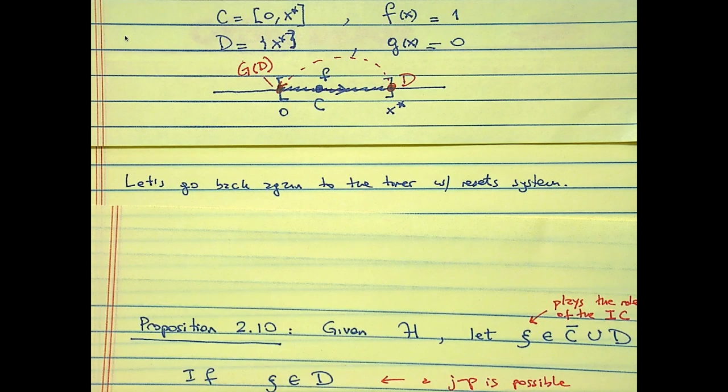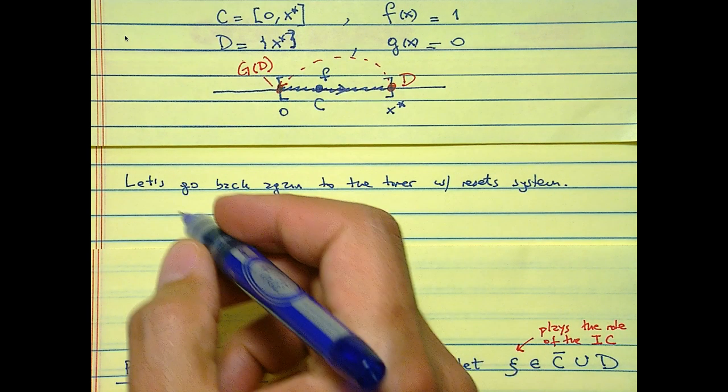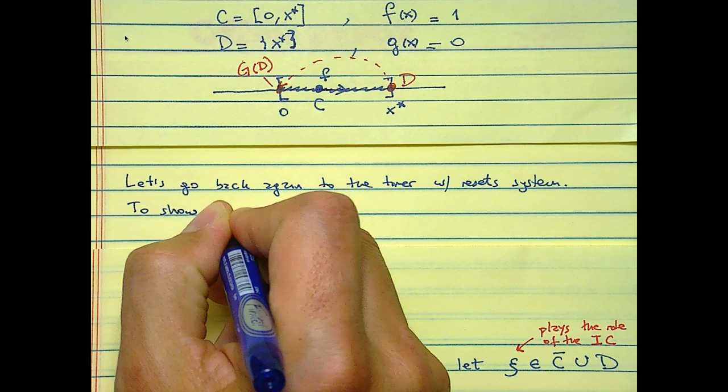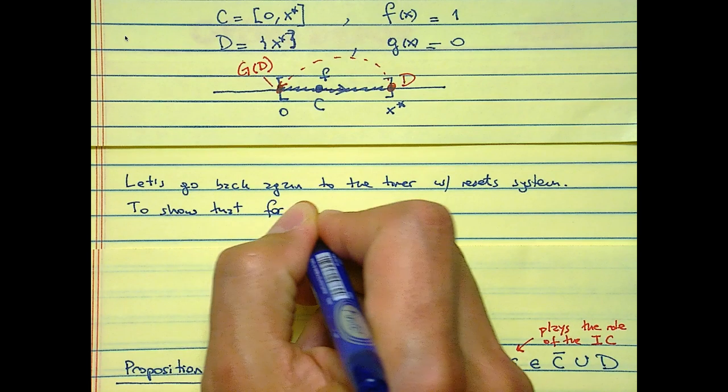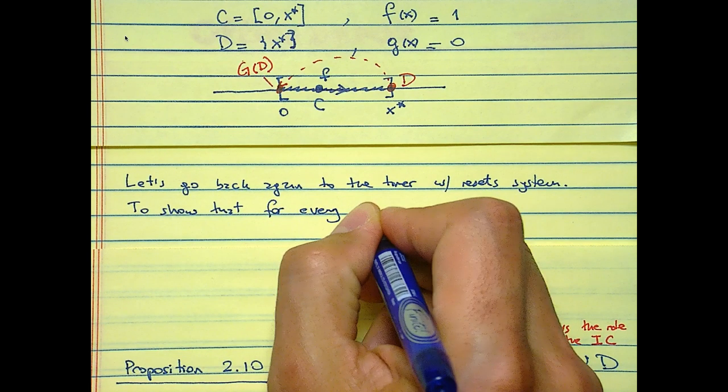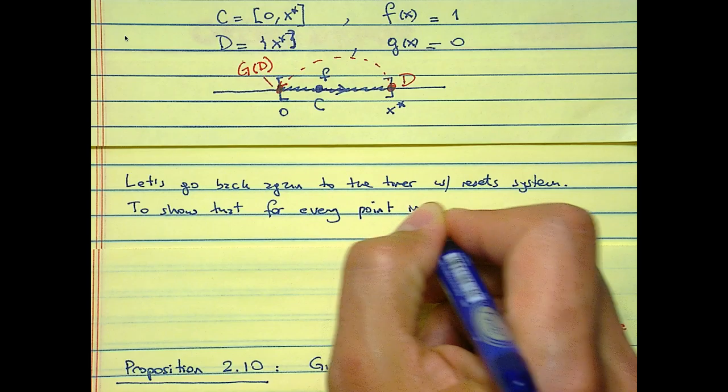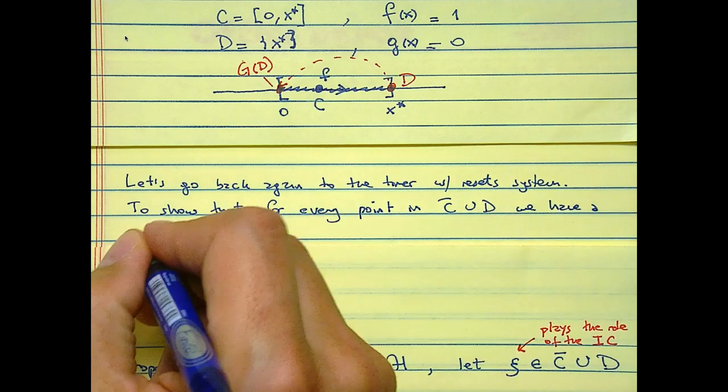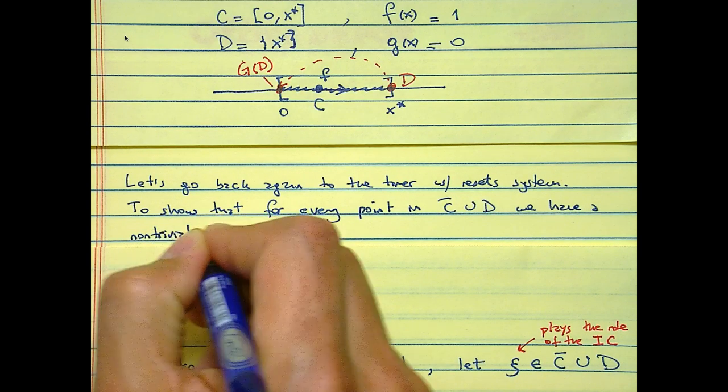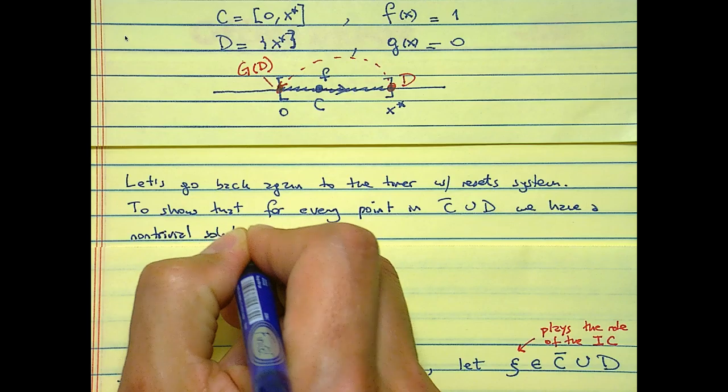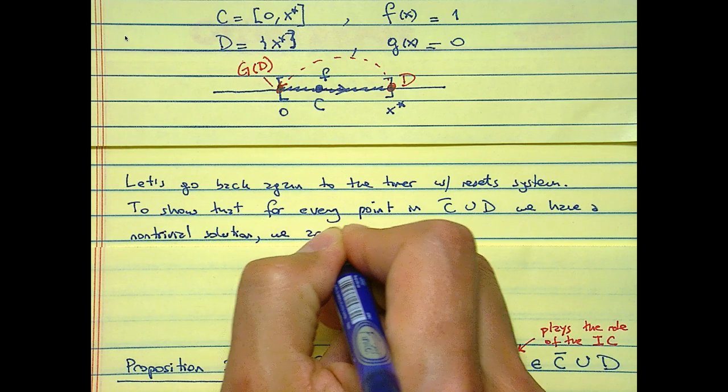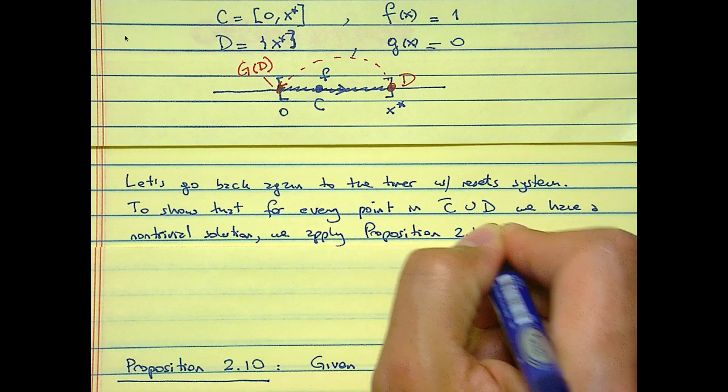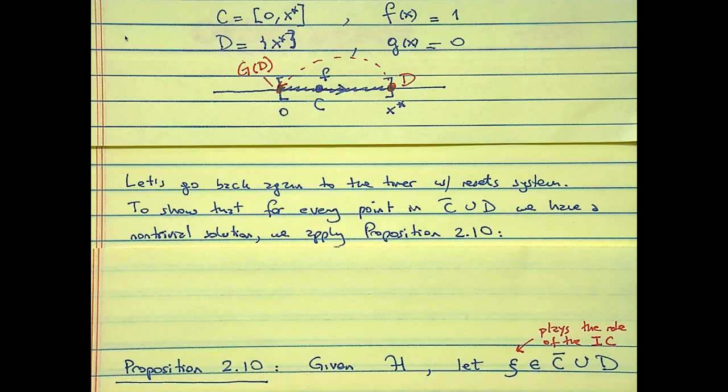The condition in Proposition 2.8 can be checked. So to show that for every point in C bar union D we have an ulterior solution, we apply Proposition 2.10.